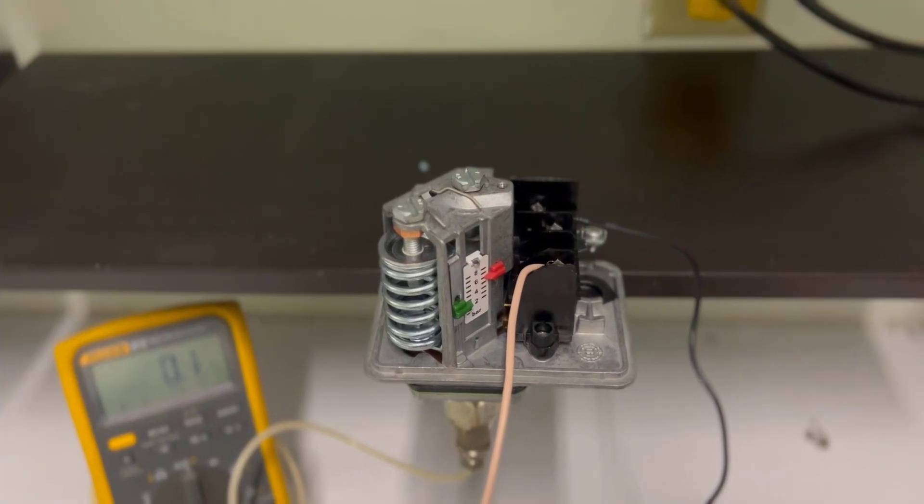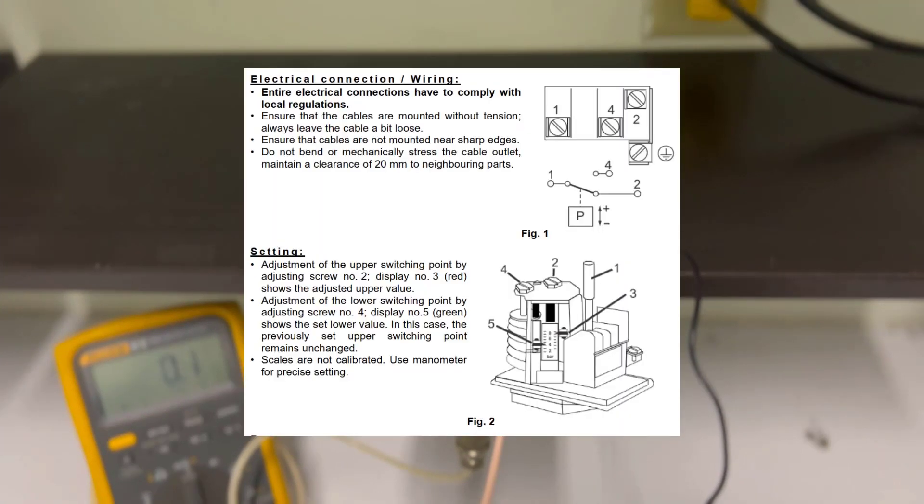In adjusting the set point, follow the instructions provided by the manufacturer. As you can see in the image, to adjust the upper switching point, you have to adjust screw number 2. And for the lower switching point, it can be adjusted on screw number 4.